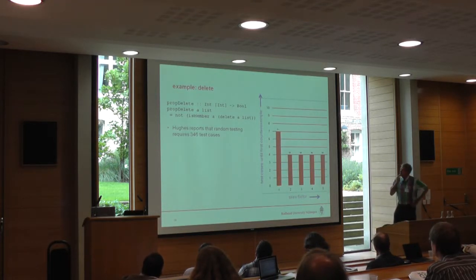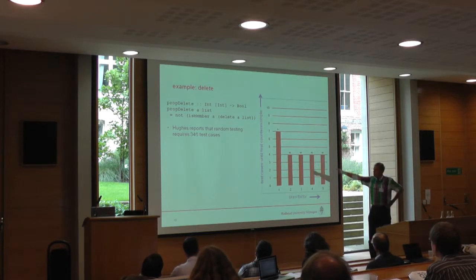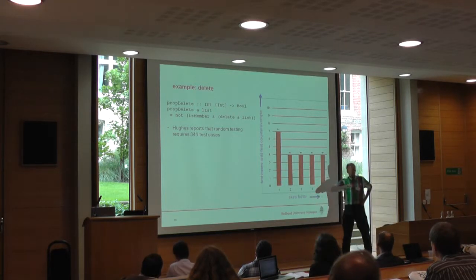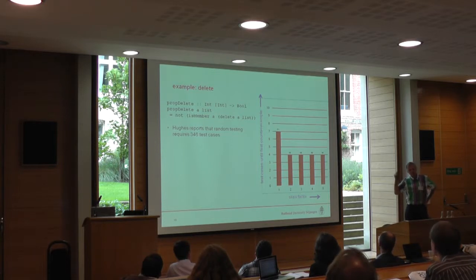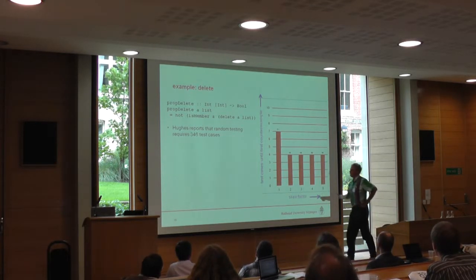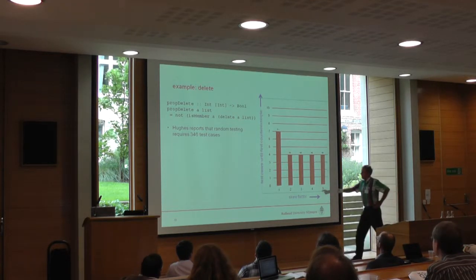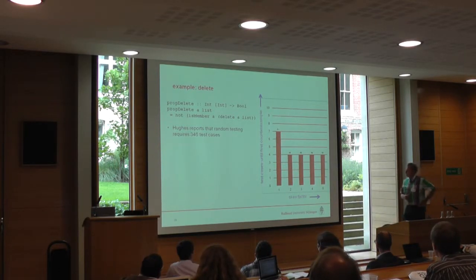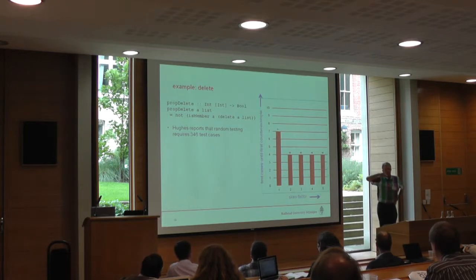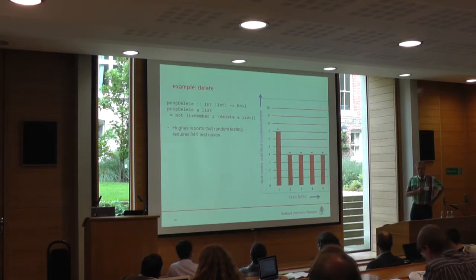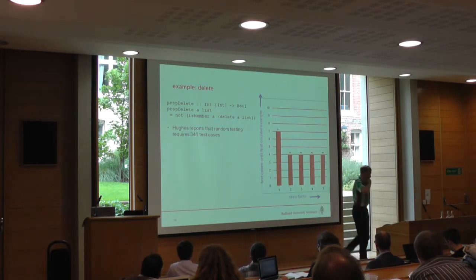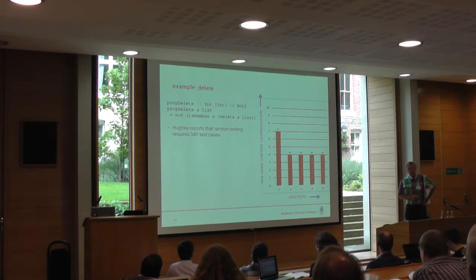Some examples. Here is the delete function — it proves that even a correct delete function, with a wrong length function, is detected. With systematic generation at skew factor 1, I need seven test cases to find this. With a better skew factor I gain almost a factor of two, so only three test cases — but that's not a big deal. QuickCheck reports needing 300-something test cases for random testing, so systematic generation is much more efficient.